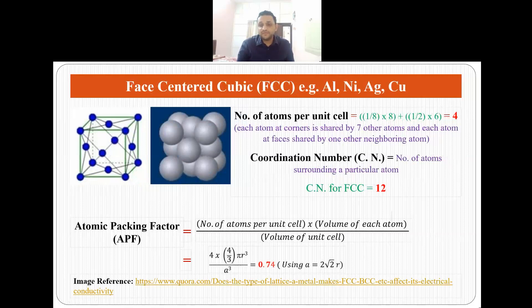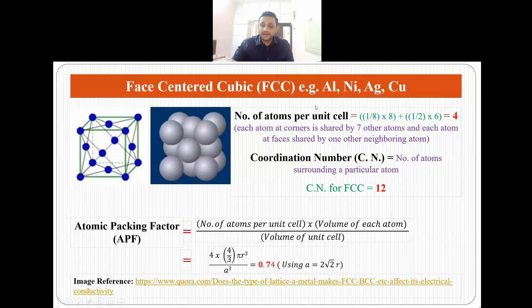Then face centered cubic or FCC crystal systems. Here we have 8 atoms at the corners and 6 atoms at the faces. These 8 atoms at the corner, each atom at the corner is shared by 7 other atoms and each atom at face is shared by one other neighboring atom. That is why the total number of atoms per unit cell is 1/8 times 8 plus 1/2 times 6 that is 1 plus 3, 4.